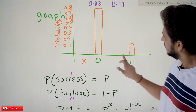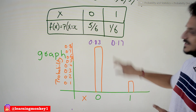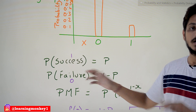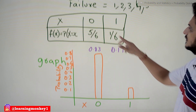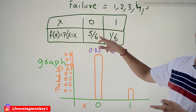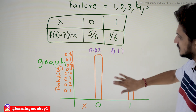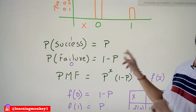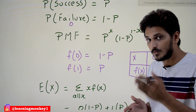The probability of success is considered as P. In the dice experiment, the probability of success (rolling a six) is 1/6, which we call P. The probability of failure is 1 minus P, which is 5/6. Because Bernoulli distribution has only two outcomes, if it is not one it must be the other — so probability of success is P and probability of failure is 1 minus P.